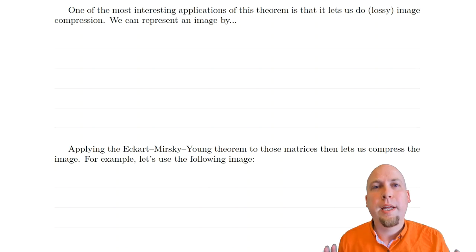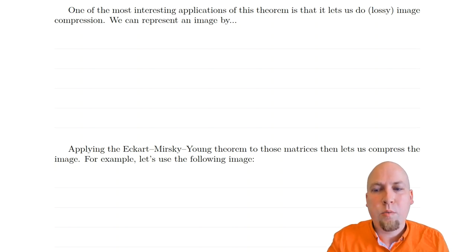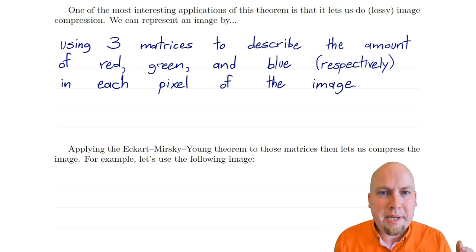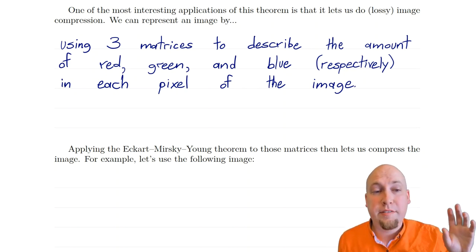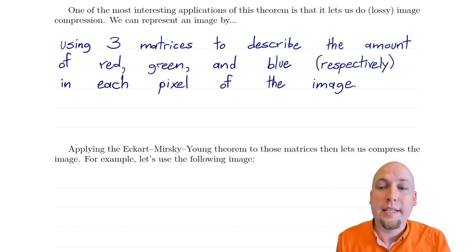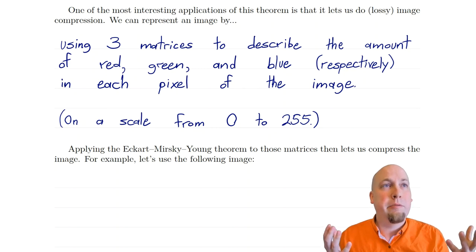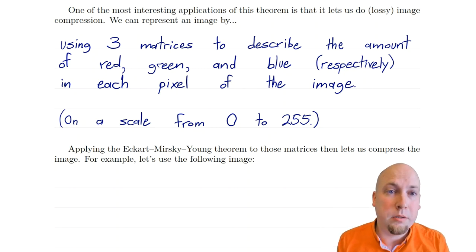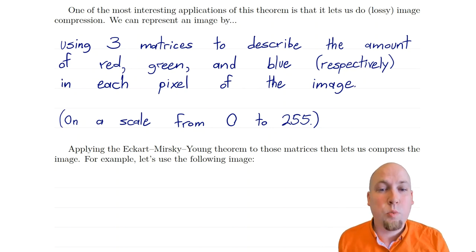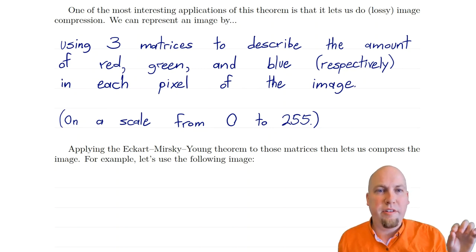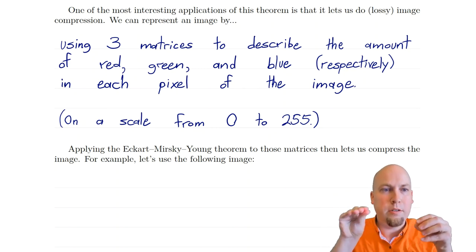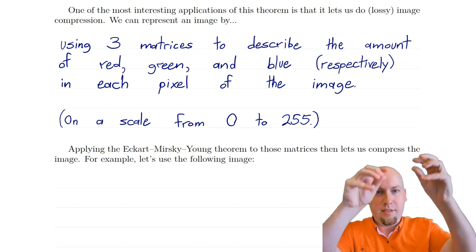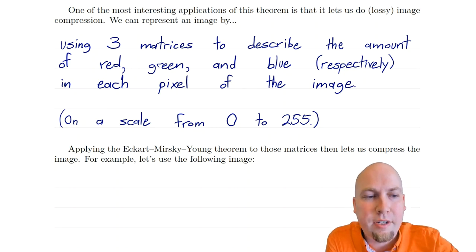One really neat application of this theorem is image compression. To do that, we need to represent an image via matrices. One of the simplest ways is to use three matrices: one describing how much red there is in each pixel, one for green, and one for blue. Using an additive color scheme, every color can be written as some amount of red plus green plus blue. We use a scale from 0 to 255, where 0 means none of that color and 255 means the maximum amount.